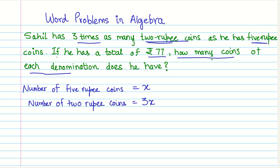Now it says if he has a total of ₹77, how many coins of each denomination does he have? Now that is the next important step. We just don't have to add these two together because we have some amount which is contributed by the number of five rupee coins, that is x, and the amount that is contributed by the number of two rupee coins.